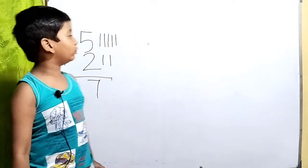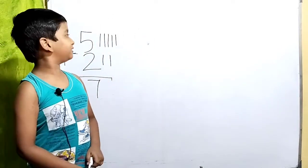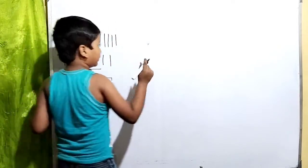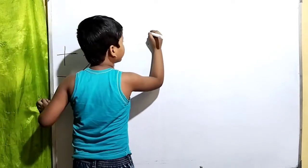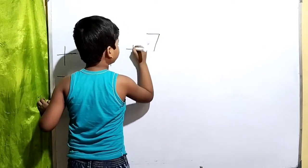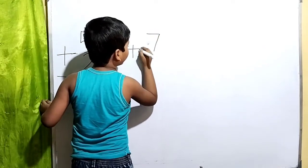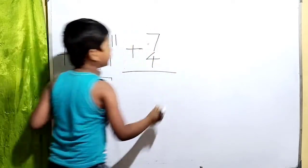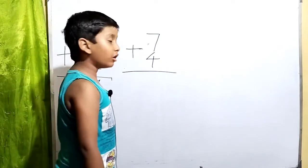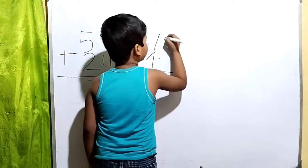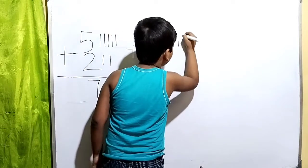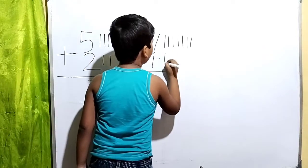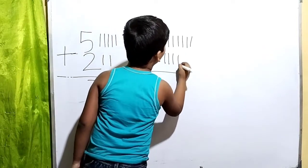That's how we do one-digit addition. Friends, let's do the next problem. Next is seven plus four. Let's see what is our answer. First we have to draw seven lines: one, two, three, four, five, six, seven. Then we have to draw four lines: one, two, three, four.